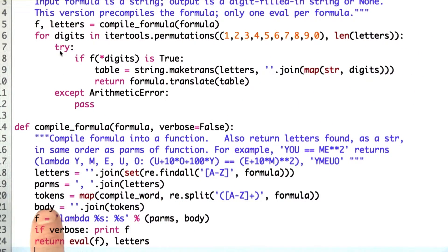I've got my tokens. The body of the function would just form by concatenating all the tokens together. If I wanted to, I could put spaces between them. It doesn't matter. Then the function is lambda created with the parameters and the body.